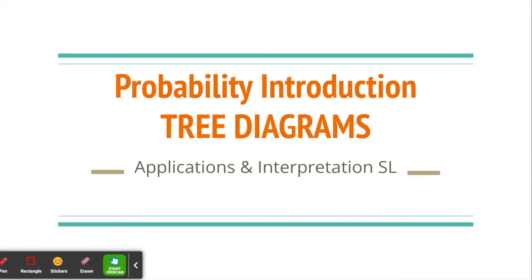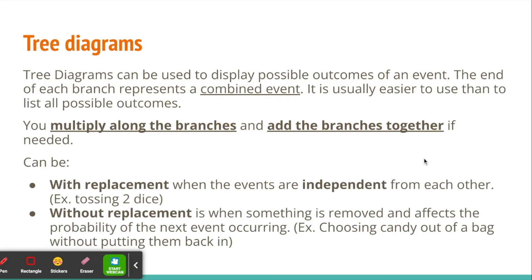Today's video we're going to talk about tree diagrams, which is another really useful representation for probability. Tree diagrams are used to display multiple outcomes and they're often easier to use than just listing all of the outcomes together.